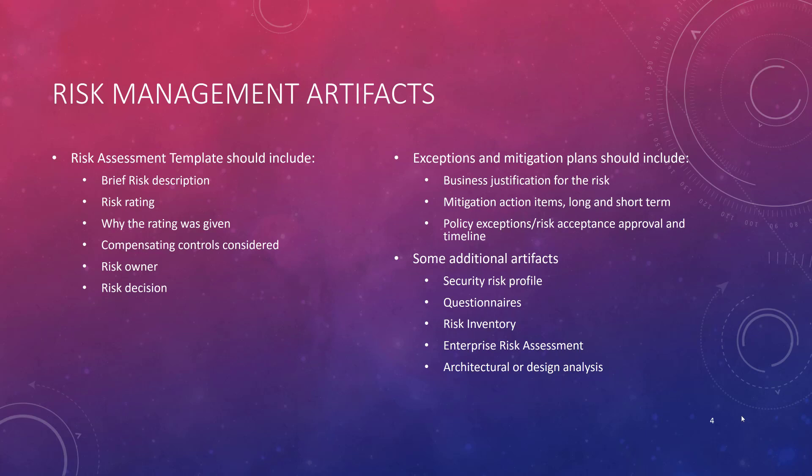As you're doing risk assessments, there are various types of artifacts to consider. This is not meant to be an all-exclusive list — just to give you the general idea. You've got the risk description, the ranking, why it was given that ranking, any compensating controls that should be considered, what is the risk owner, and what is the risk decision associated with that. That may be a really good format for doing a risk assessment.